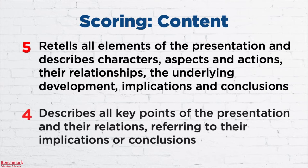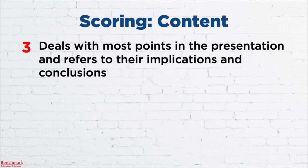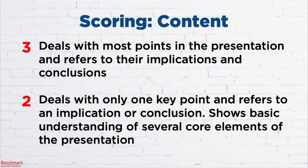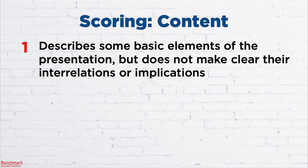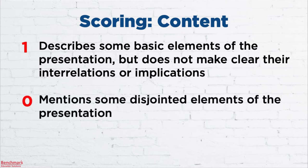With a score of 3, you are dealing with most points in the presentation. A score of 2 means you've dealt with only one key point and referred to an implication or conclusion, and shown a basic understanding of several core elements. A score of 1 means that you've described some basic elements but have not made clear any interrelations or implications — basically, you've just described a few points. A score of 0 means that you have mentioned a few elements of the presentation, but not much else.